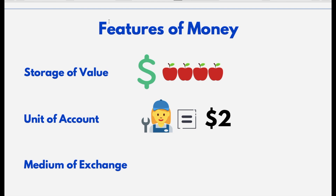Let's understand the store of value first. Money is only a piece of paper with something written on it, signed by a person named governor — unless it is capable of storing some value. Think about the dollar: it is able to store four apples, meaning if I have a dollar in my pocket, I would be able to buy four apples. That's what we call store of value — if I have a piece of paper and I'm able to get something out of it, the paper has value. In this case, the value is four apples.